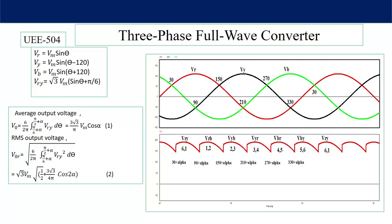From these expressions, if the firing angle is changed then both RMS and average output voltage vary. If the firing angle is more than 90 degrees, the average output voltage is negative and the converter operates in inversion mode. If the firing angle is less than 90 degrees it operates in rectification mode. By changing the firing angle we can change the mode of operation, which means a three-phase full wave converter can be used as a three-phase dual converter.